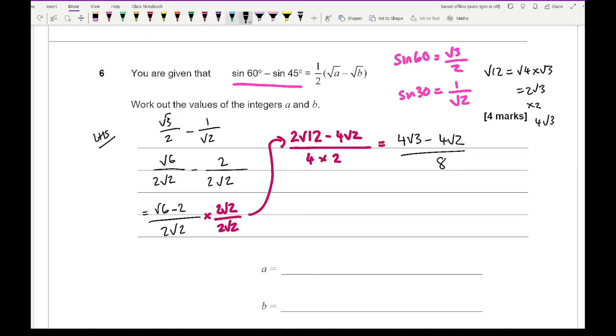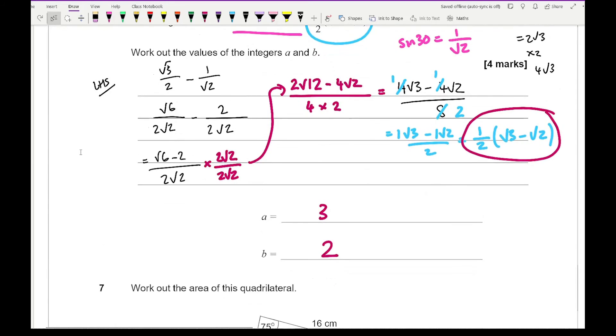So from this what I end up with is 4 root 3 minus 4 root 2 all over 8. Now you might be thinking to yourself where am I going with this? But if I can then simplify this I can cancel all of those down so that gives me a 2 and that becomes a 1. And what I end up with is 1 root 3 minus 1 root 2 all over 2 which I can then take out the half. Now I end up with something that looks like this. Now if I compare that to this you can see that a is going to equal 3 and b is going to equal 2. Now again that's a lot of work but again hopefully I've answered that within 4 minutes because obviously that's how many marks are on offer. But that's one way of getting your correct answers of 3 and 2.